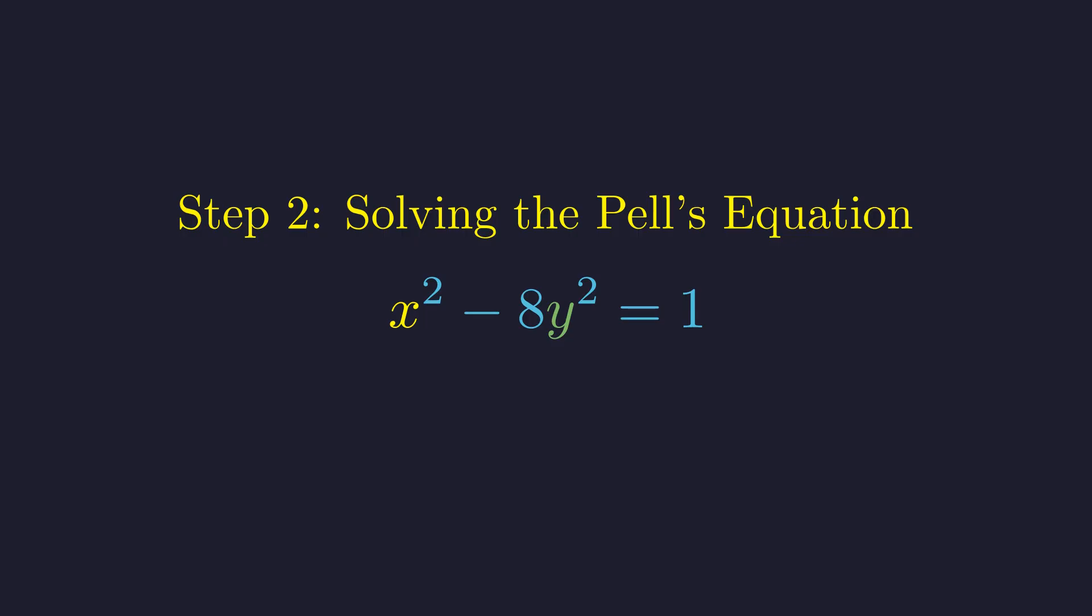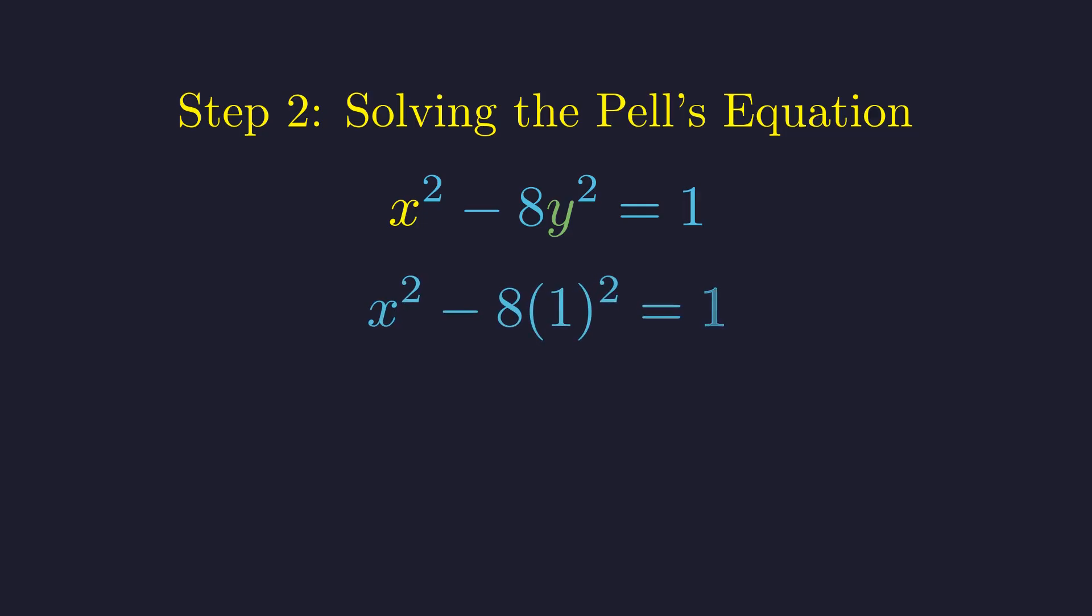Let's test y equals 1. Substituting y equals 1 into the equation, first, let's simplify the constant term. 1 squared is 1, so this becomes x squared minus 8 equals 1. Now, to isolate the x squared term, we add 8 to both sides. This gives us x squared equals 9. Finally, we take the square root of both sides to solve for x. Since we are looking for positive integer solutions, x equals 3.